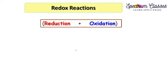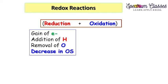As I mentioned, redox is composed of two parts: reduction and oxidation. Here we will first discuss the special features of reduction. Reduction is the gain of electrons, or we can say addition of hydrogen takes place in that reactant, or removal of oxygen takes place, or there is a decrease in oxidation state. If any one of these four features is present, you can recognize that reduction is occurring.